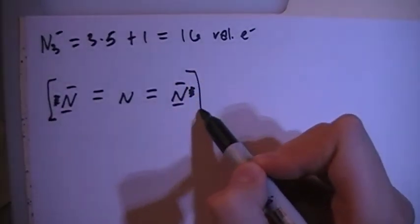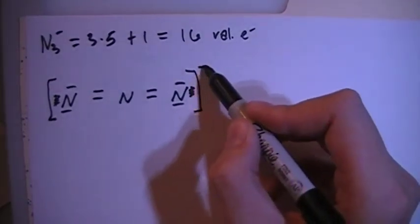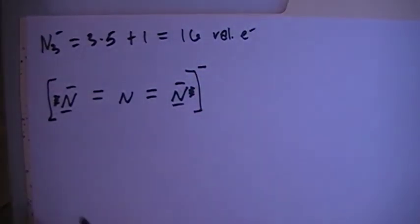And we also have to add in the brackets with the minus 1 charge because this is an ion.